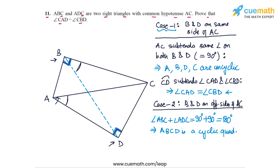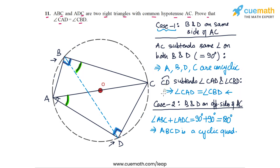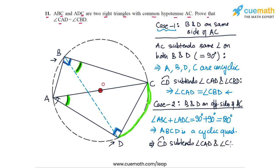Since ABCD is a cyclic quadrilateral, the angle subtended at A by arc CD and the angle subtended at B by arc CD must be equal. Arc CD subtends angle CAD and angle CBD at the circumference, so both angles are equal. Hence angle CAD equals angle CBD, proving the result in Case 2 as well.